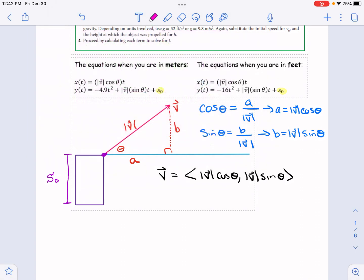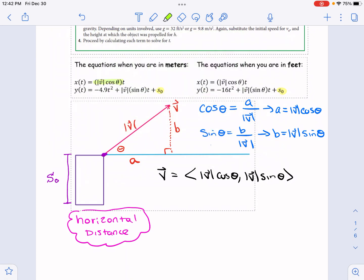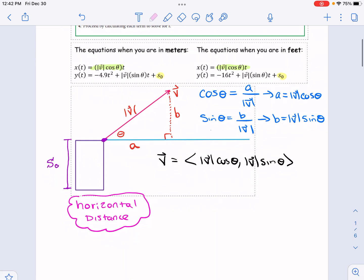So X of T is going to be your horizontal distance. Why does it have the form it does above? You'll notice it's simpler than the vertical component, right? And that's because it's really just a distance equals rate times time situation. So I'll use that as a kind of a guiding post, distance equals rate times time.